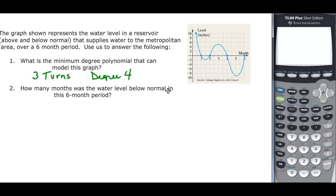How many months was the water level below normal in the six-month period? The x-axis is normal. So it's got here's one month, and then it's above, two to three, and three to four. And then from four to five it's below, and from five to six it's below. So that gives us two. So we have a total of three months.